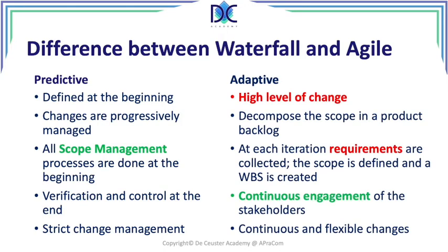When we look at an adaptive environment, we have a high level of change. We decompose the scope in a product backlog, and at each iteration the requirements are collected. The scope is defined and a WBS is created. We have continuous engagement of the stakeholders and continuous and flexible changes.